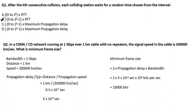Converting units: 2 lakh = 2 × 10^5, which is in the denominator, so it becomes 10^(-5). Thus 1/2 gives 0.5, making the propagation delay = 0.5 × 10^(-5) = 5 × 10^(-6) seconds. Now putting it into the formula: minimum frame size = 2 × 5 × 10^(-6) seconds × 10^9 bits per second.